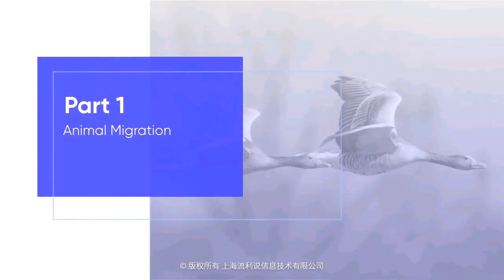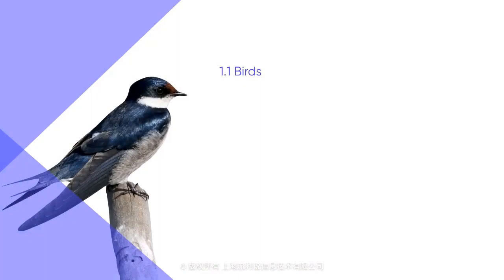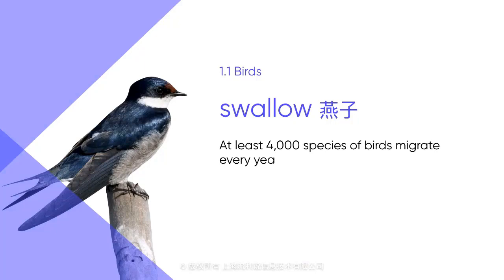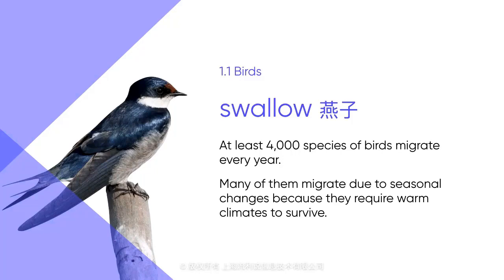Let's first talk about animal migrations. In China, there is a very popular children's song called The Little Swallow. In the song, there is one line saying that swallows visit there every spring. The lyrics are actually based on swallows' migration patterns. They migrate to the south before winter and fly back to the north when spring comes. Swallows are not the only birds that do this. At least 4,000 species of birds migrate every year — about 40% of the total number of birds in the world. Many of them migrate due to seasonal changes because they require warm climates to survive, and may migrate thousands of kilometers in search of warmer weather.